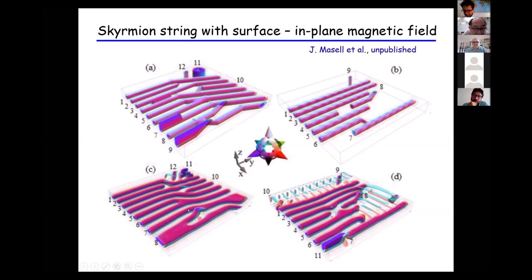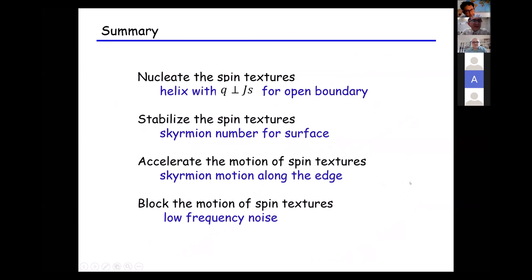Sometimes the skyrmion string ends at the surface, because the skyrmion is stabilized near the surface. This string configuration becomes a metastable configuration even when the magnetic field is applied in parallel. There are other varieties of topological defects observed in the numerical simulation. To summarize, there are four aspects of boundary effects on the spin texture. Thank you very much.